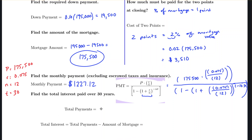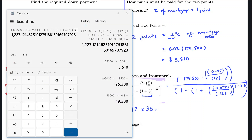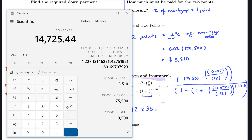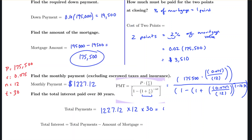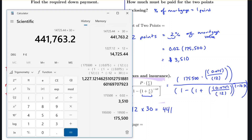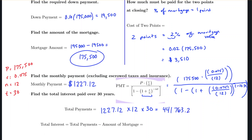To calculate the total payments for the loan, we take $1,227.12 times 12 payments per year, times 30 years. That gives us the total payments over 30 years.